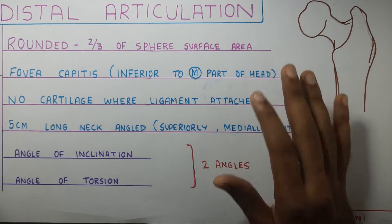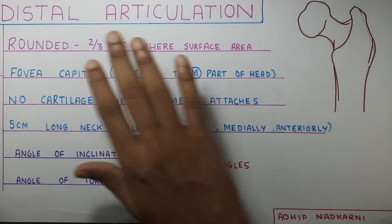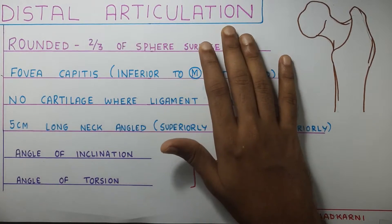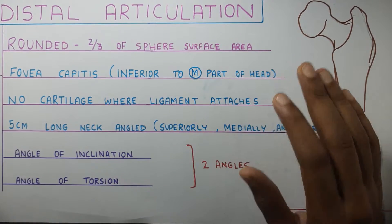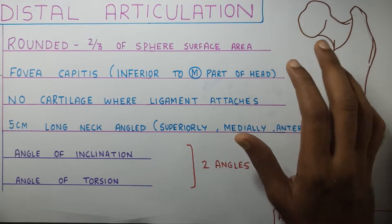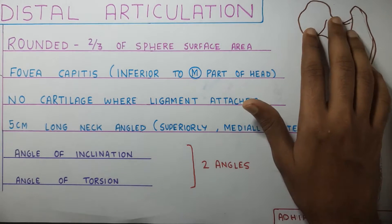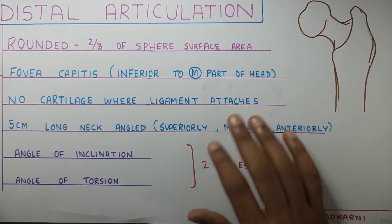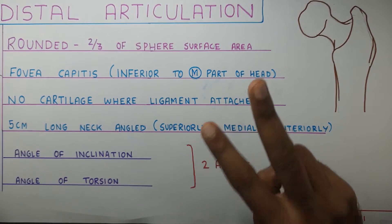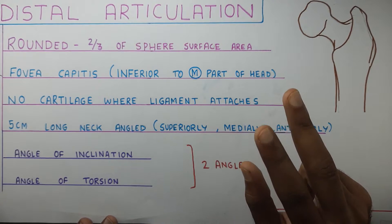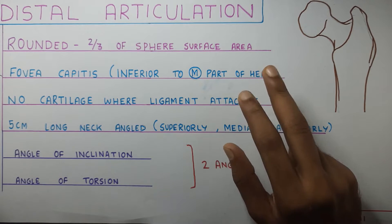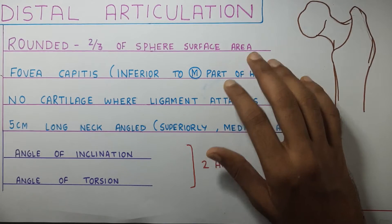In this video, we are going to talk about the distal articulation of the hip joint. We will look at the structure and then we will look at the two angles that are described under this topic.